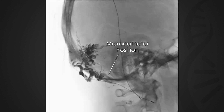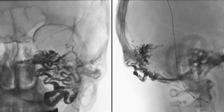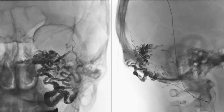On the other hand, we felt that these same factors made the use of NBCA as a liquid embolic agent ideal in this situation. We used a 2-to-1 mixture of Lipiodol to NBCA and concomitantly pushed D5 water through our intermediate catheter to allow for the NBCA to push out more distally.